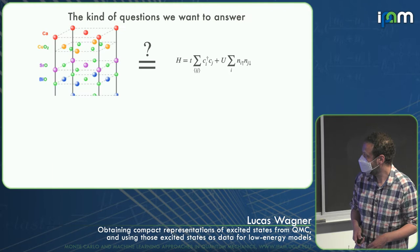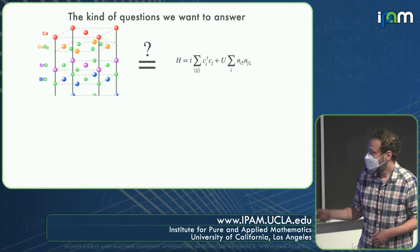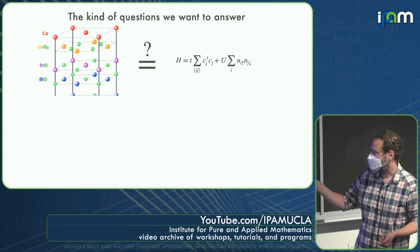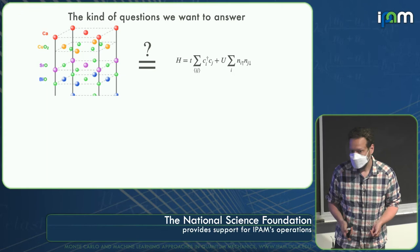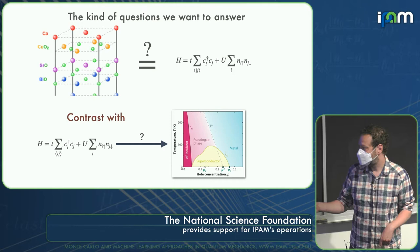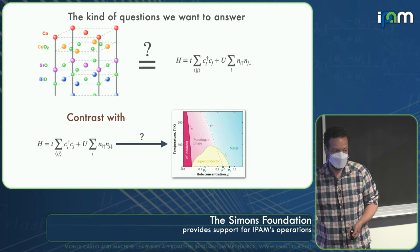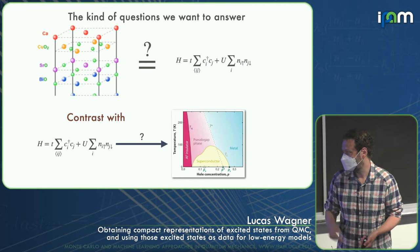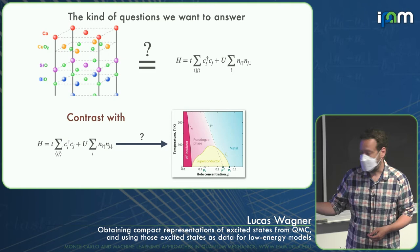The kind of question we want to answer is: say we have some material — is it actually described by this model? Is the hypothesis that this model describes the low-energy excitations of the system correct? I want to contrast that with the capybara thing: 'I have my effective Hamiltonian — does it give the same phase diagram?' That's a different logical statement. This is a useful question to ask; it's just a different question than we're trying to answer here.